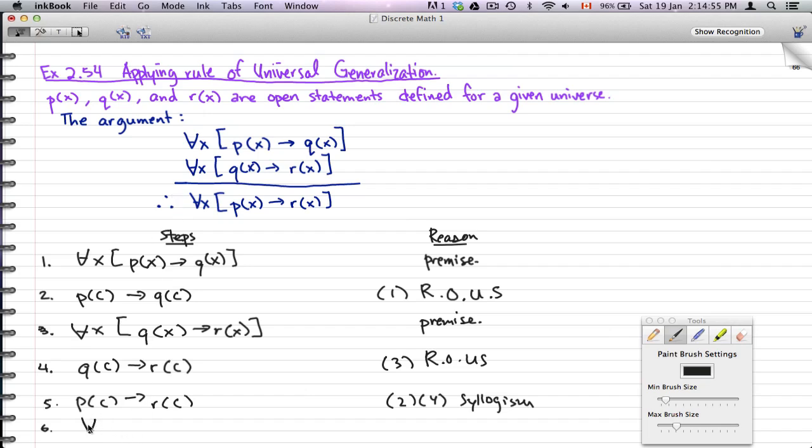So that will give us ∀x [p(x) → r(x)]. This is true because of the rule of universal generalization.